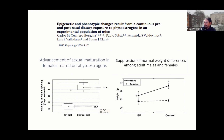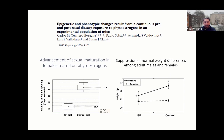What we observed, as you can see in the plot to the left, is that the day of sexual maturation — which can be easily identified in mice because a vaginal plug is released on that day — was delayed by about six days in the population that consumed phytoestrogens.